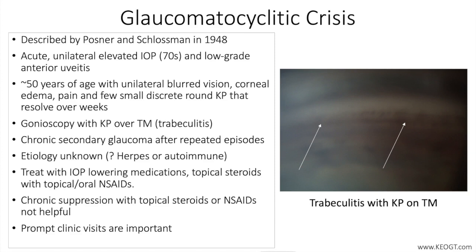The typical patient is 20 to 50 years old with complaints of mild ocular discomfort and blurred vision. Examination reveals a mild inflammatory reaction in the anterior chamber with inferiorly distributed fine keratic precipitates and elevated IOP, with a pressure up to 70 millimeters of mercury.